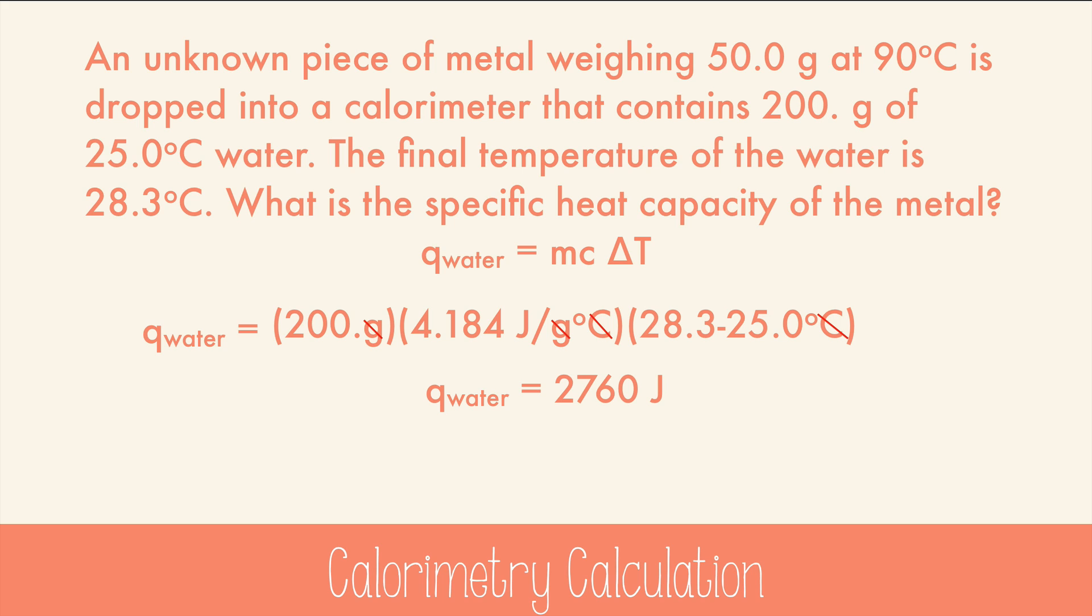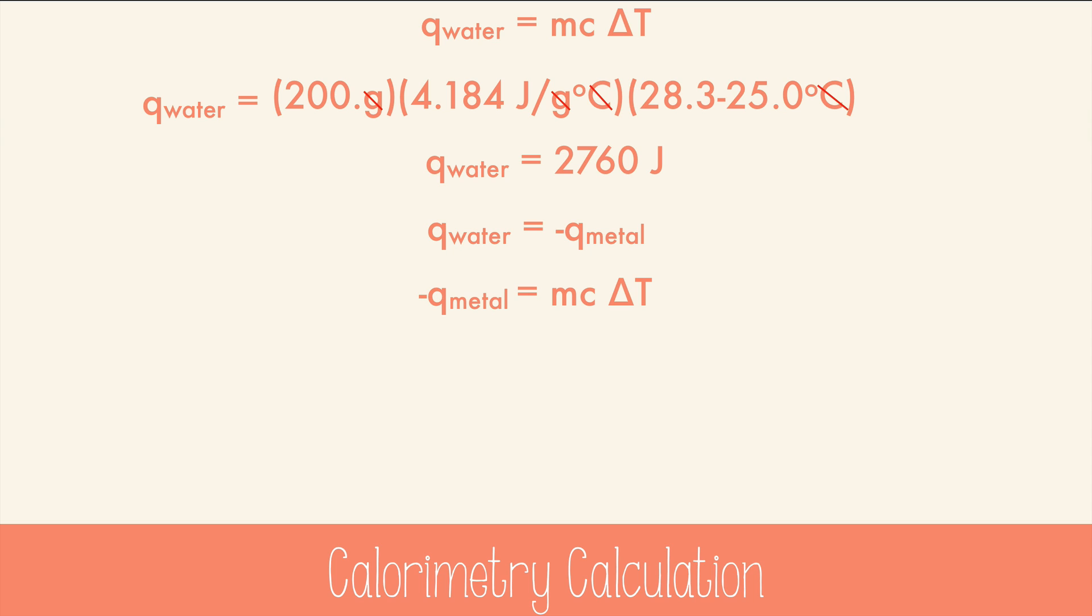Because the water could only absorb heat that was released by the metal, we can assume the same amount of heat was released as was absorbed. So now we can solve for the specific heat capacity of the unknown metal. So here's our equation. But we want to solve for specific heat capacity. To isolate it, we'll need to divide both sides by M and delta T. The mass cancelled, delta T cancelled, and here's our cleaned up equation. Now we plug in the data and calculate. And we get 0.9 joules per gram degrees Celsius, which is the specific heat capacity of aluminum. So that was probably a piece of aluminum that was dropped in the calorimeter.